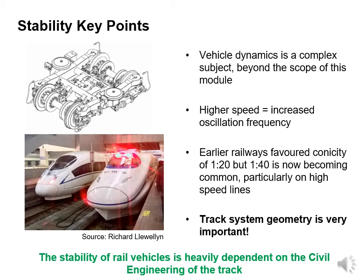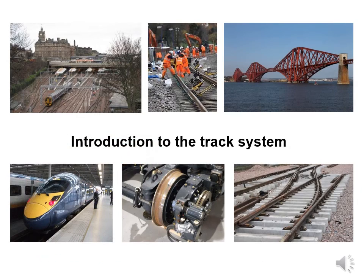Vehicle dynamics is a complex subject and is way beyond the scope of this module. Higher speed equals increased oscillation frequency. Earlier railways favoured conicity of about 1 in 20, but 1 in 40 is now becoming common, particularly on high speed lines. Track system geometry is very important, and the stability of rail vehicles is heavily dependent on the civil engineering of the track.